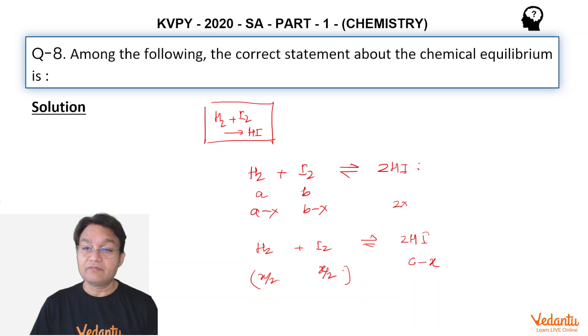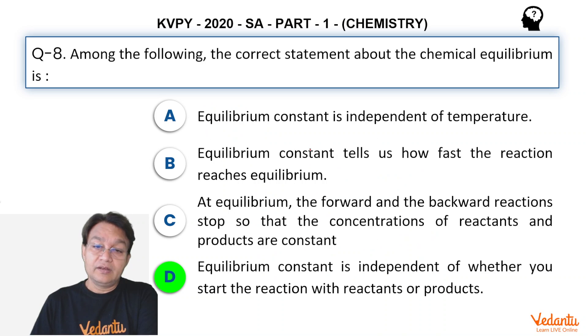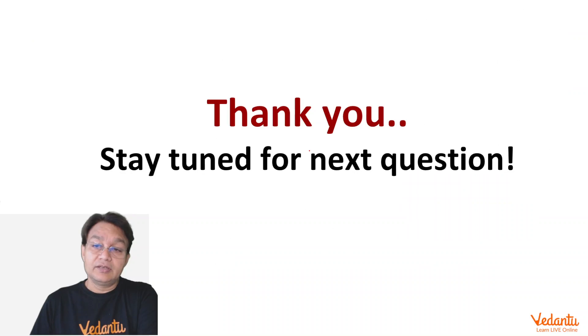Whether you start from reactant or whether you start from product, you have to get to the equilibrium. And at equilibrium, the ratios of the product's concentration and reactant's concentration raised to the respective stoichiometric coefficient will always be constant. That is the concept of equilibrium. So fourth option is correct option. D option is the correct option. I hope that you understand this and stay tuned for next question.